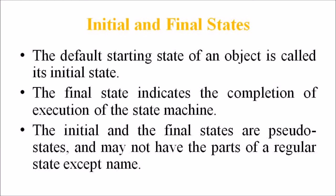There are also the initial and final states. The default starting state of an object is called the initial state. The final state indicates the completion of execution of the state machine. The initial and final states are pseudo states and may not have parts of a regular state except the name. In the state transition diagram, the initial state is represented by a filled black circle, and the final state is represented by a filled black circle encircled within another unfilled black circle.